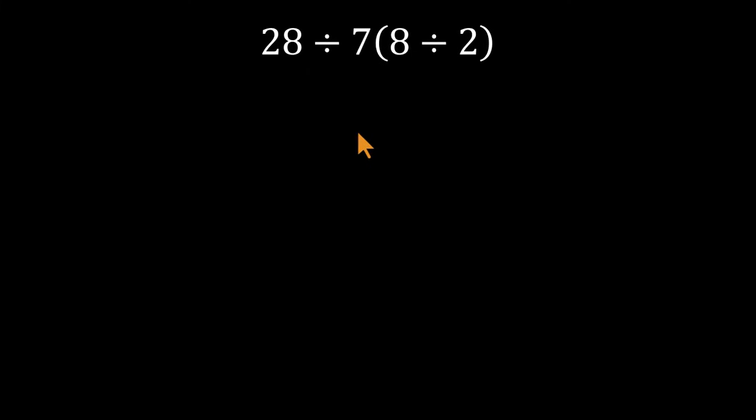Most folks dive straight into the parentheses and say, 8 divided by 2 equals 4. Then they move outward and multiply. 7 times 4 equals 28. And finally, they wrap it up by dividing. 28 divided by 28 equals 1.